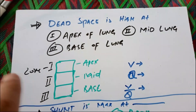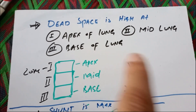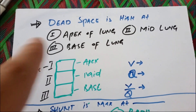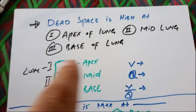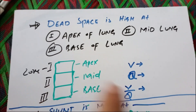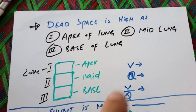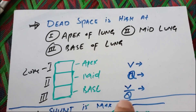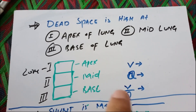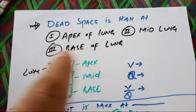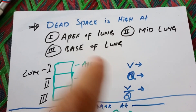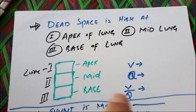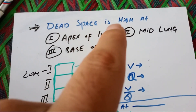So the answer is: dead space is maximum at the apex, zone 1. V is high at the base, Q is high at the base, but V/Q is high at the apex. Individually both V and Q are high at the base, but when we take the ratio V/Q, it is high at the apex. When V is more than Q, this is dead space. So dead space is maximum at the base — sorry, at the apex, zone 1.